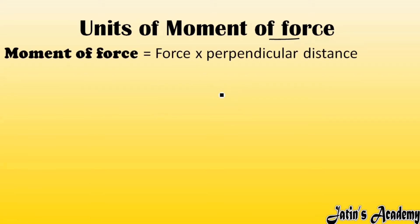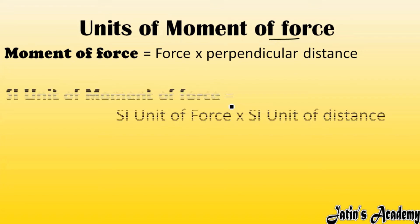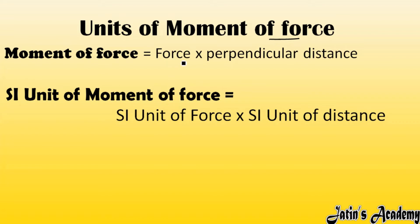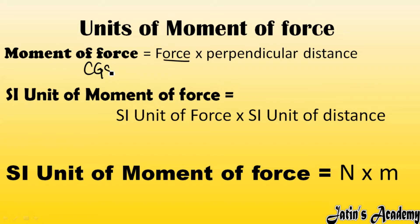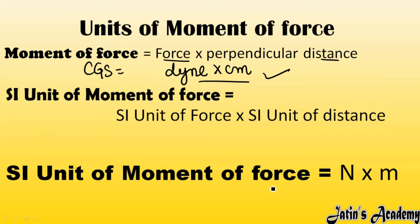Now let's find the units of moment of force using the formula: moment of force = force × perpendicular distance. The SI unit of force is newton and the SI unit of distance is meter, so the SI unit of moment of force is newton-meter. The CGS unit of force is dyne and the CGS unit of distance is centimeter, so the CGS unit of moment of force is dyne-centimeter.